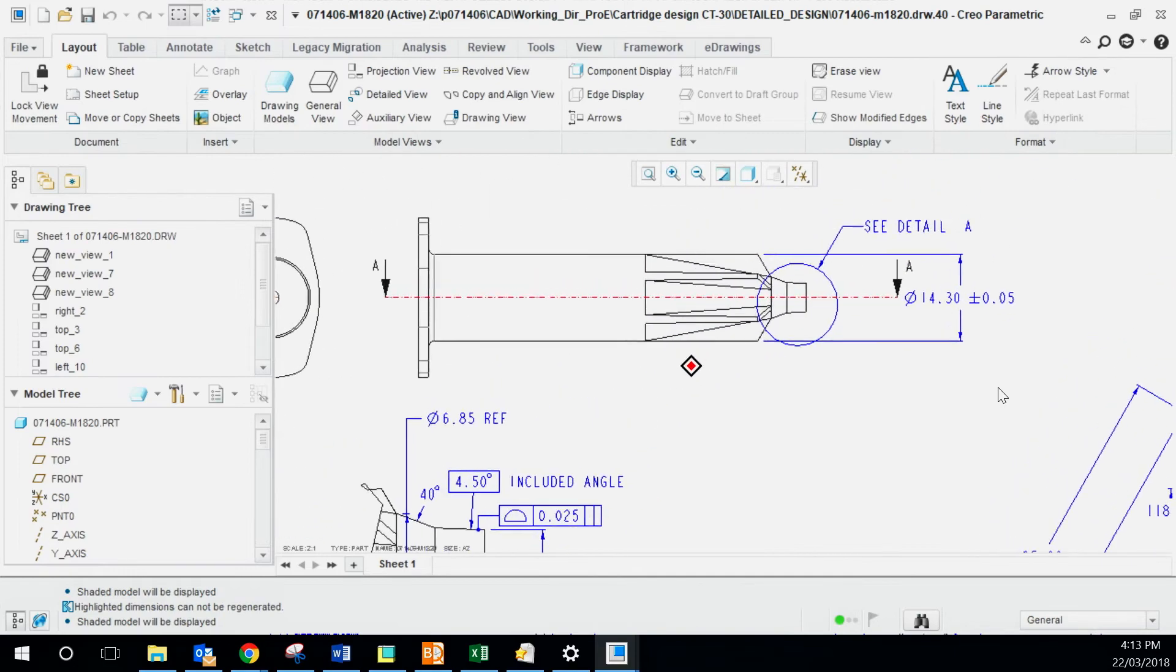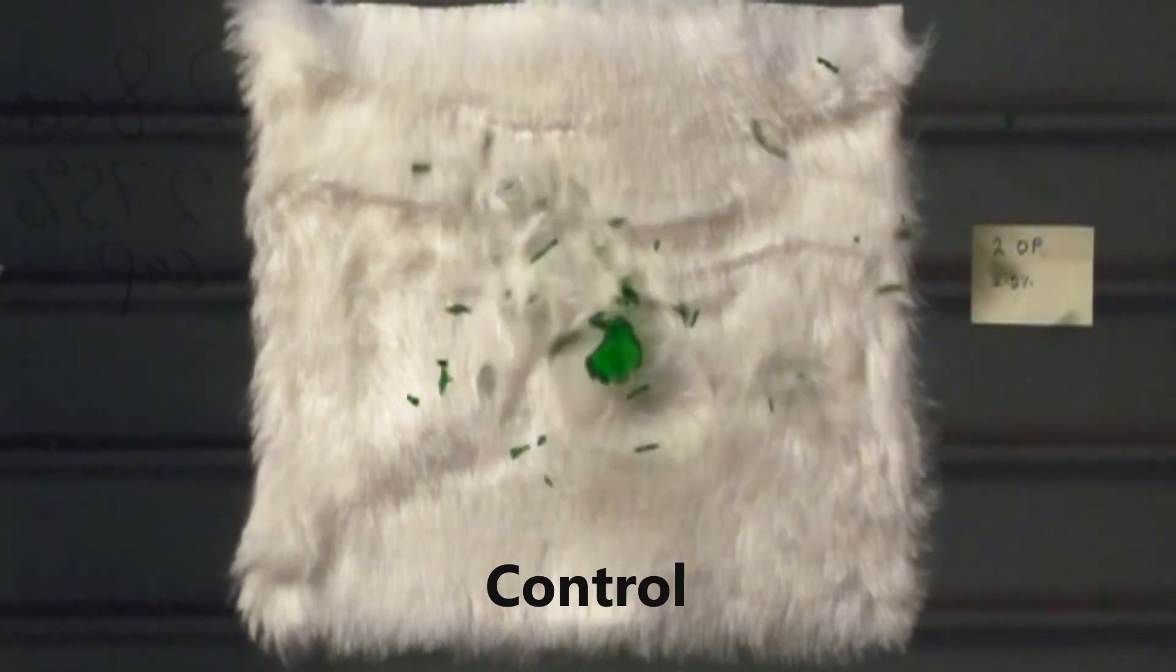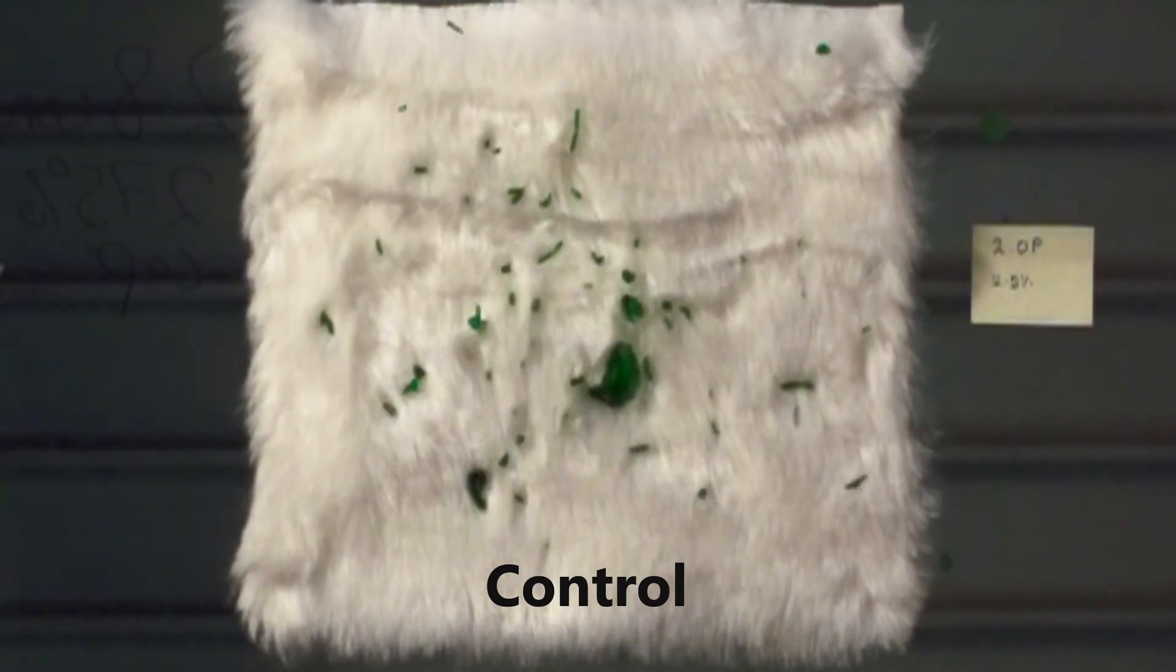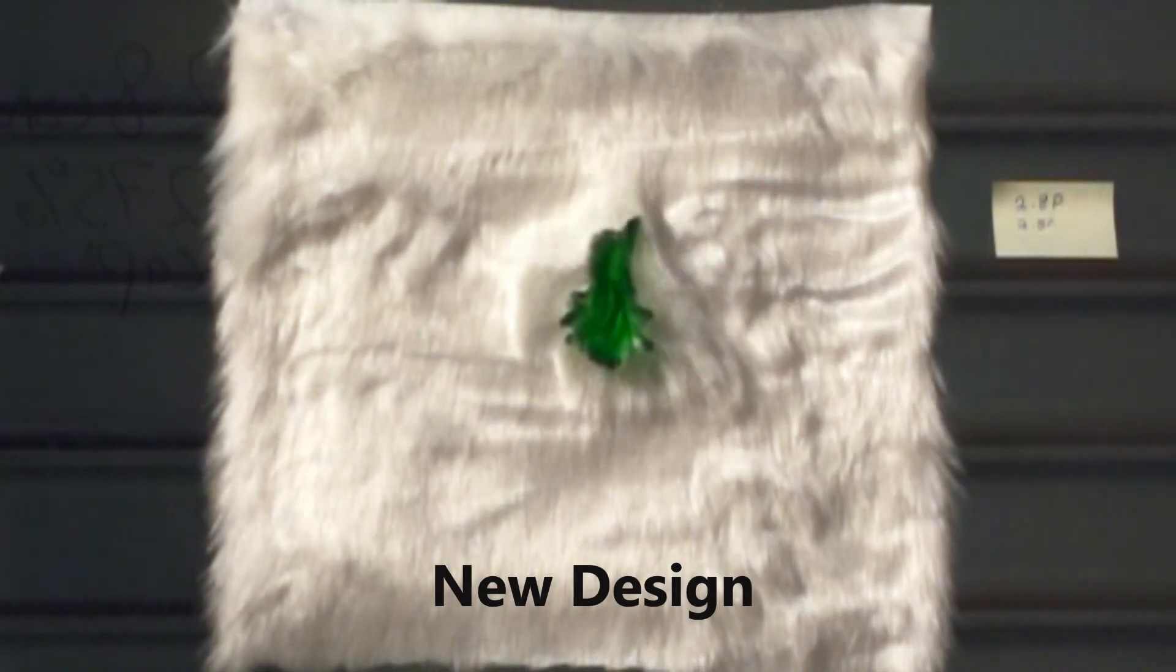After tooling, we received samples and validated that they were actually performing as well as our concept validation. The improvements that we saw in the cartridges reduced our gel splatter from 280 millimeters to 40 millimeters. We've now started mass producing these cartridges which are being used in the field.